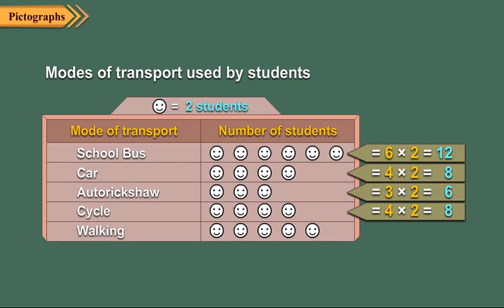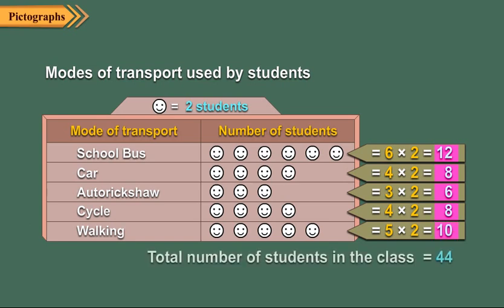And finally, number of students who come to school by walking is equal to five into two, which is ten. Now, can you find the total number of students in the class? Obviously, to find the total number of students, we find twelve plus eight plus six plus eight plus ten. It comes out to be forty-four.